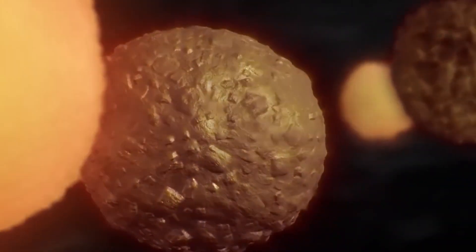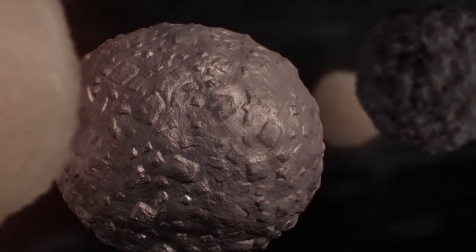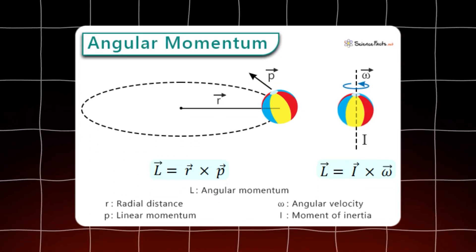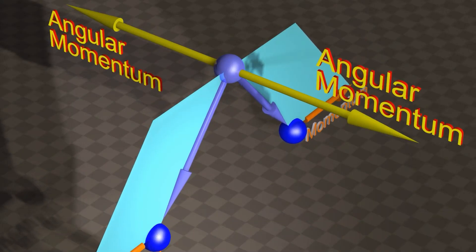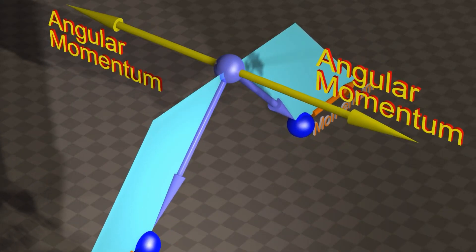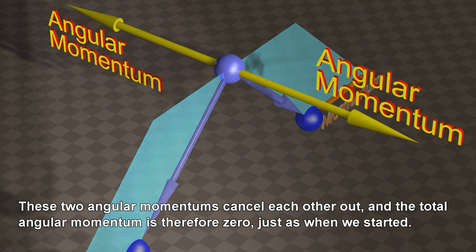In these protoplanetary disks, dust and gas particles collide and stick together, gradually forming larger and larger clumps. This is where angular momentum plays a crucial role. Angular momentum is a measure of how much the whole system, the gas, dust, and forming star is spinning.